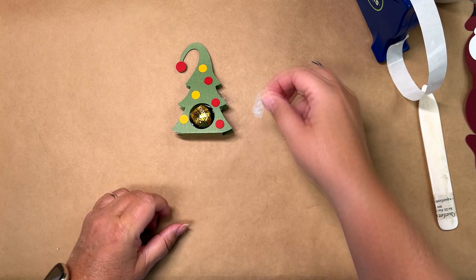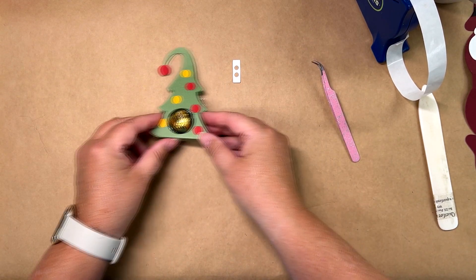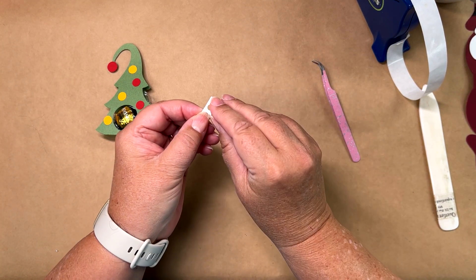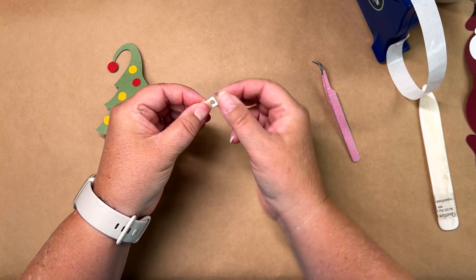Now this little hanger that I've included with it, it's not the color that I would use for the tree, but I wanted you to be able to see it. And it's got a little score line right in the middle. So you can just finger score that and burnish it down.